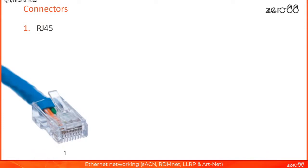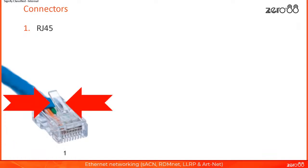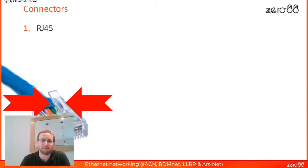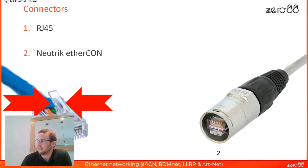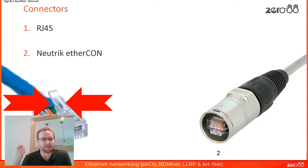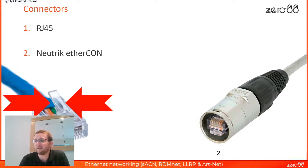Let's talk about the hardware, specifically the connectors. The main connector for Ethernet networks is called an RJ45. The main problem with it for the entertainment industry is the little tab, which commonly breaks off and causes the connector not to seat reliably. So in the entertainment industry we're much more interested in the Neutrik EtherCon connector — the middle section is identical to the RJ45, but Neutrik has put a metal surround over it, making it much more rugged and suitable for touring.